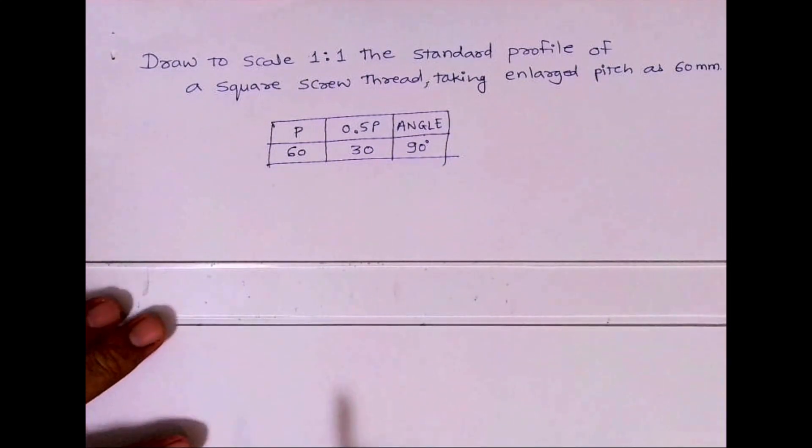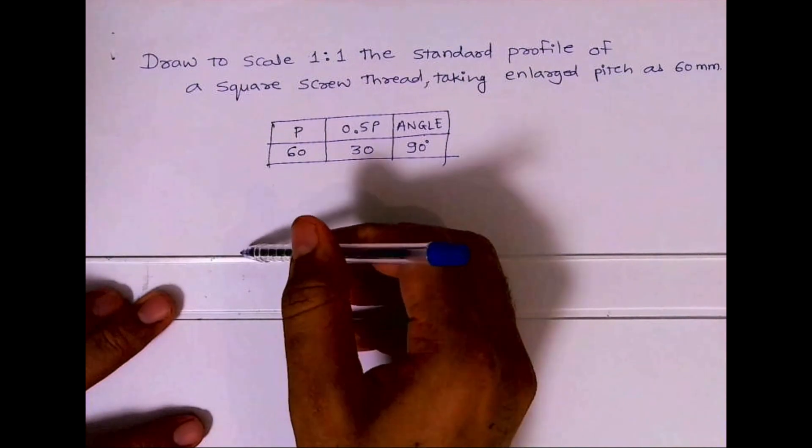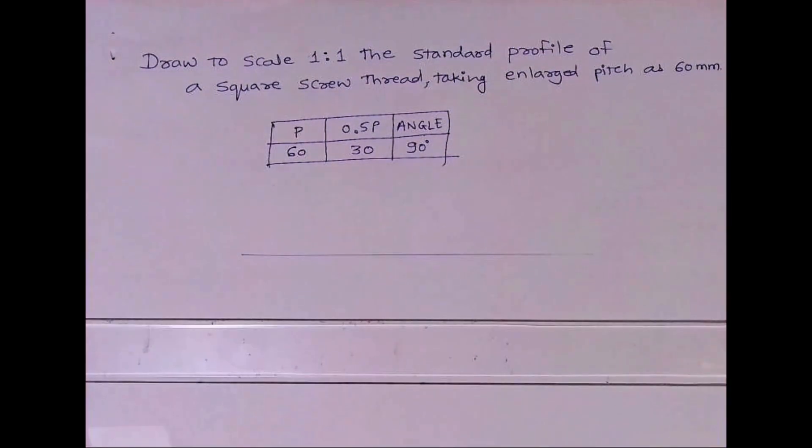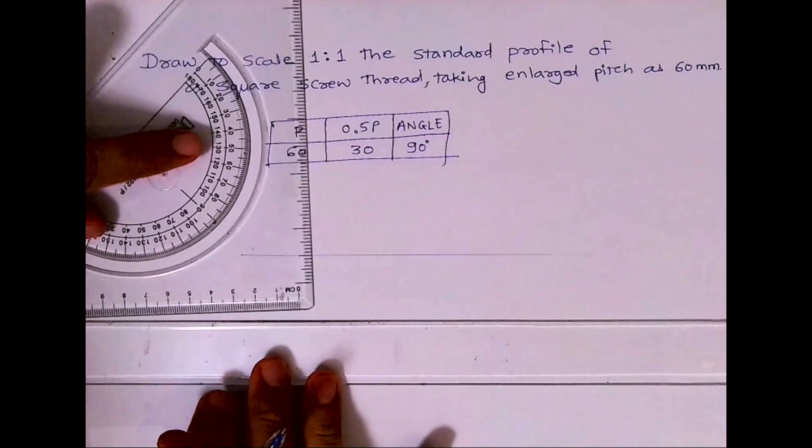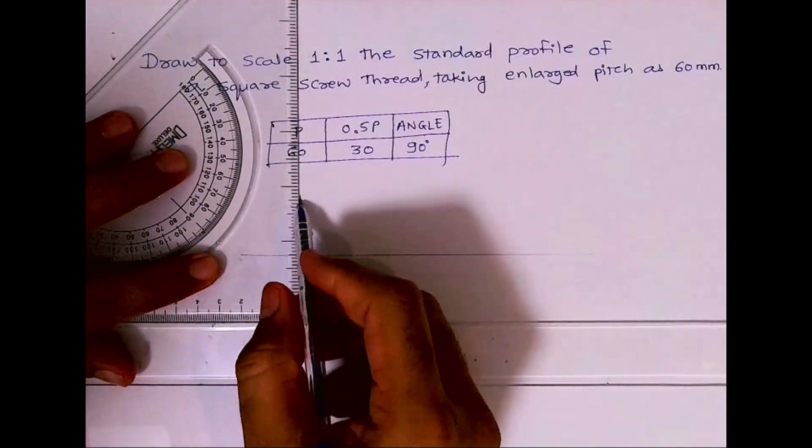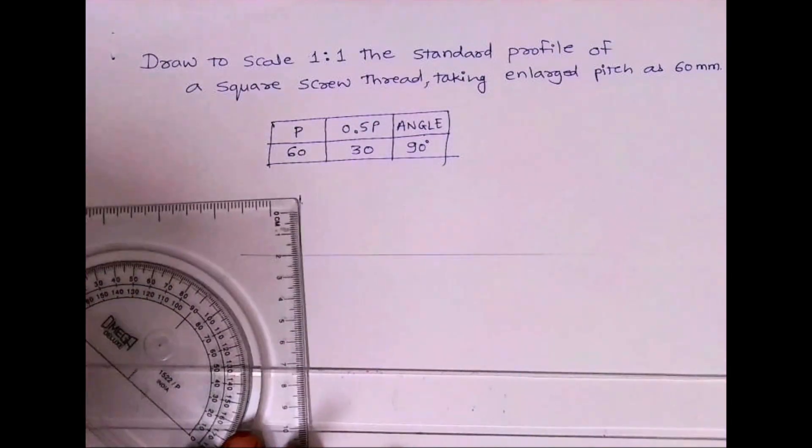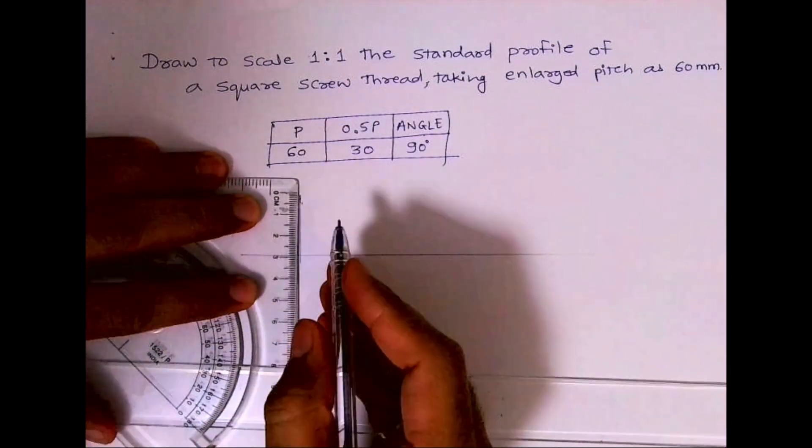First, we will draw a line 30 millimeters. This will be 30, 30 because we are taking 0.5p.